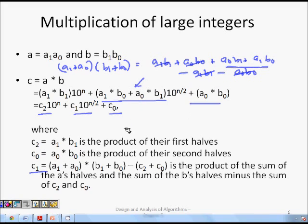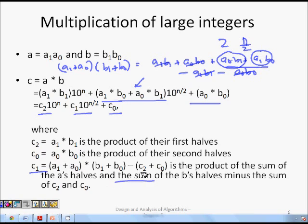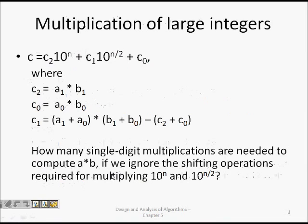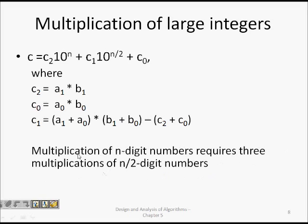The key insight is that computing c1 this way requires only one multiplication — (a1+a0)×(b1+b0) — rather than two separate multiplications for a1×b0 and a0×b1. So instead of four multiplications of n/2-digit numbers, we now only need three. We have saved one multiplication, and that is the benefit of divide and conquer.